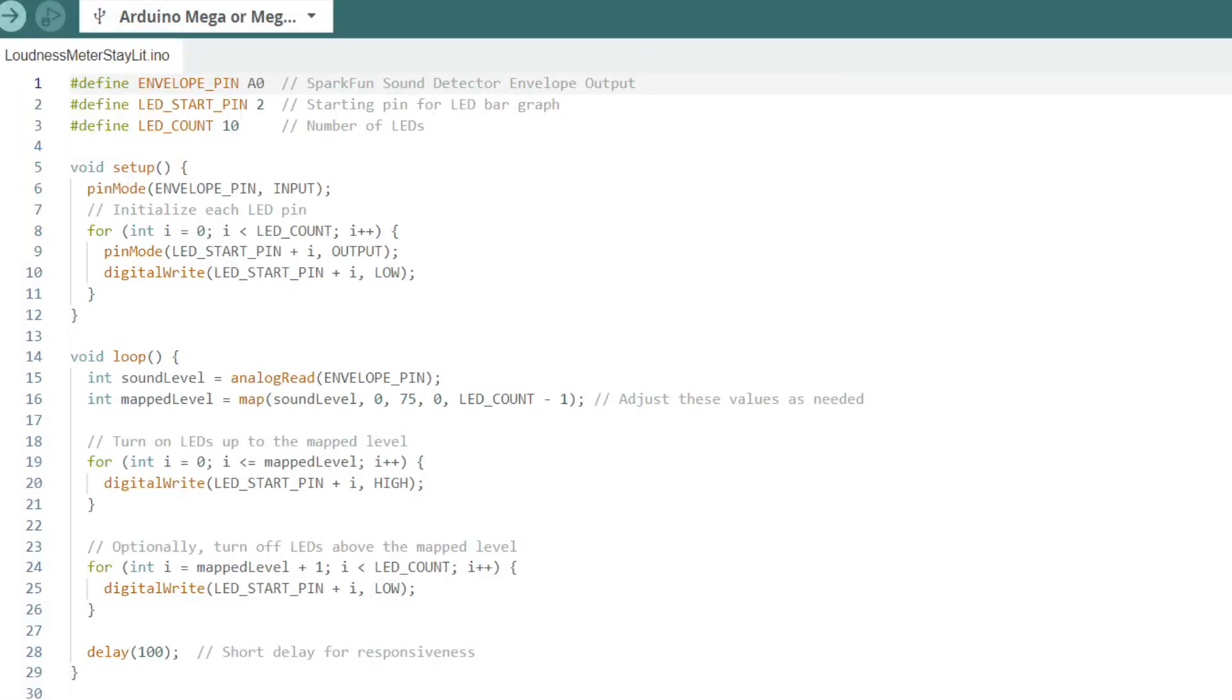Perhaps you want a different look for your LED bar graph and you want all LEDs to stay lit to indicate sound level. With a slight modification to the code we can now turn on all LEDs up to and including the one corresponding to the map level and turn off all the LEDs above the map level.